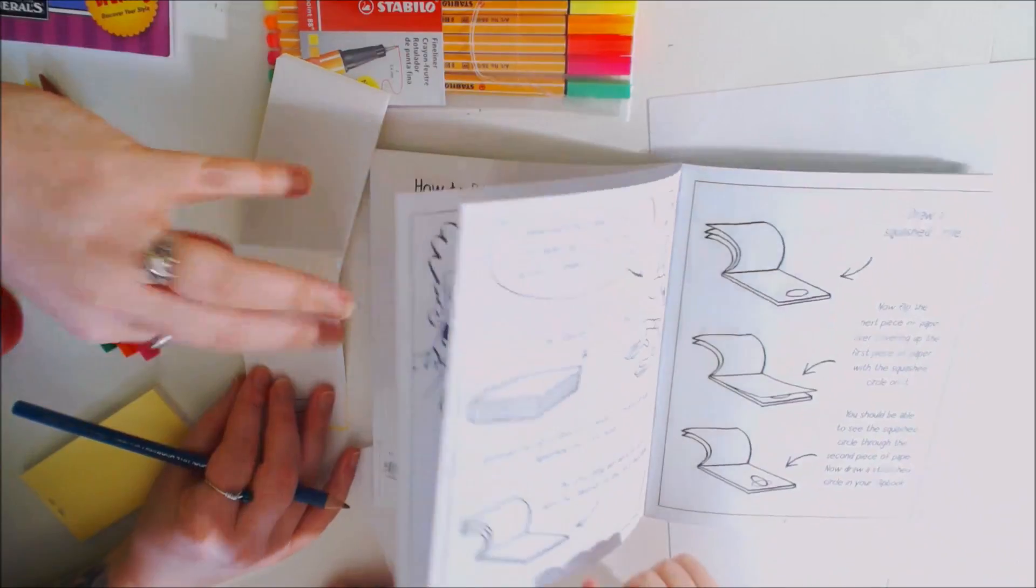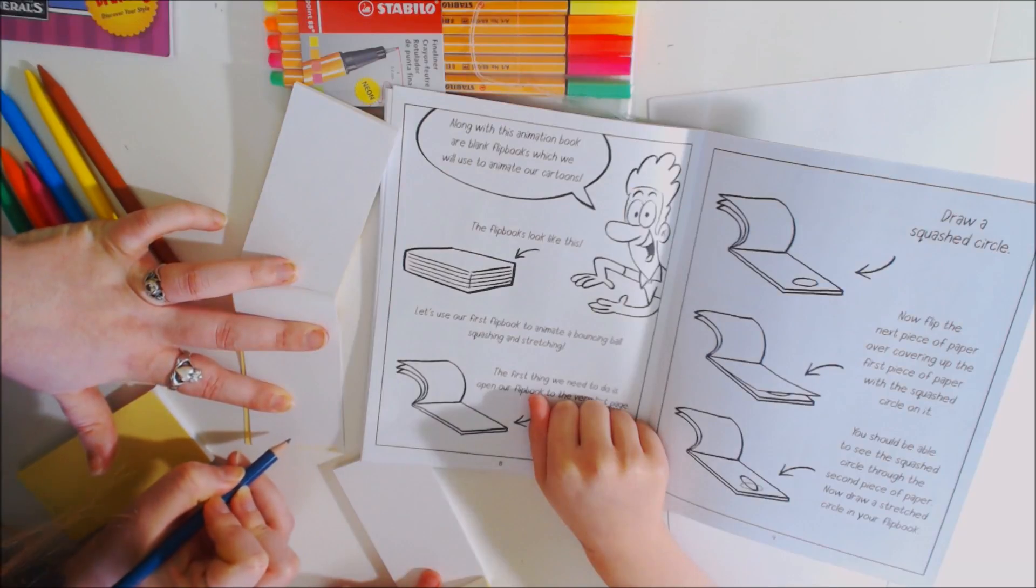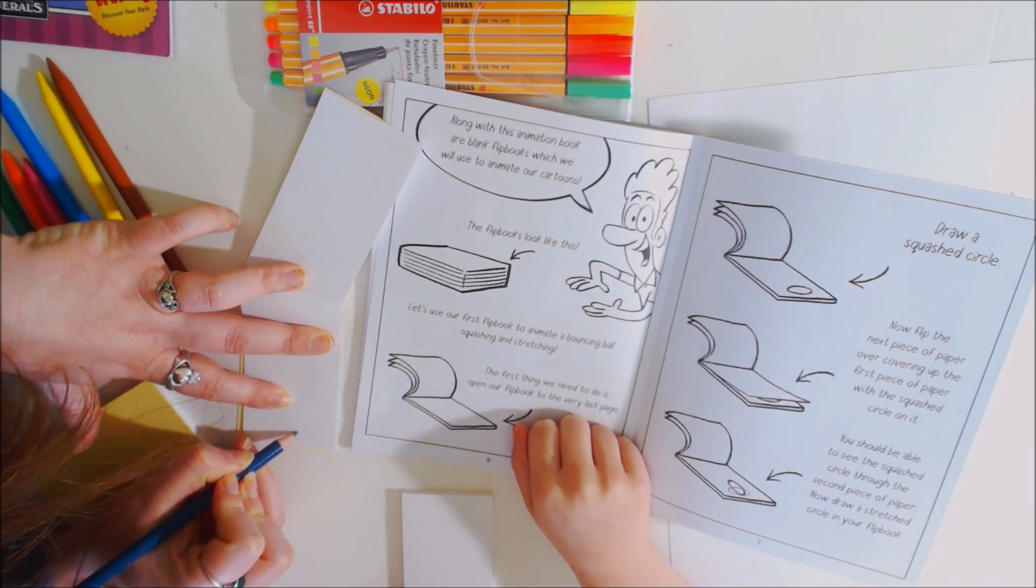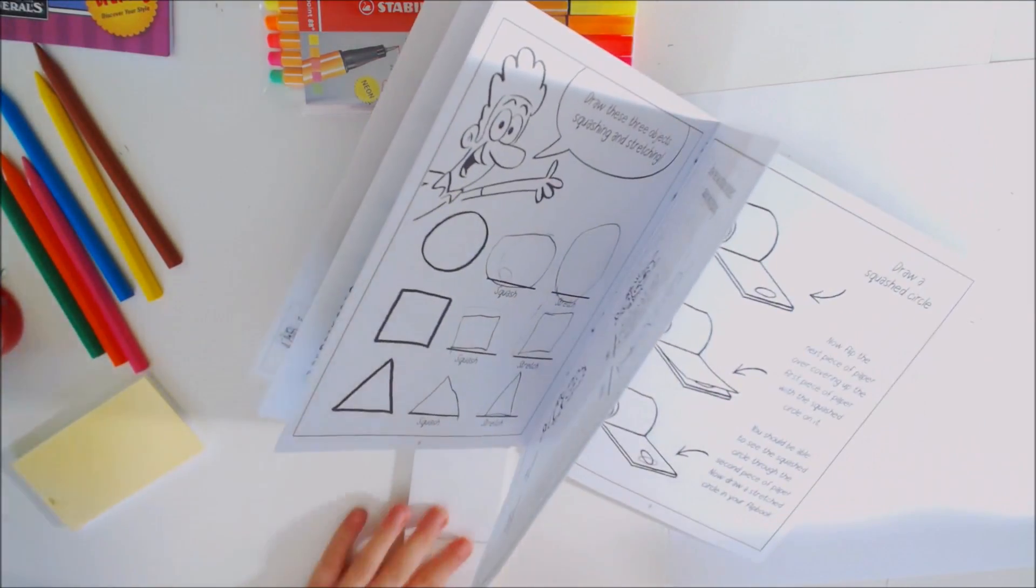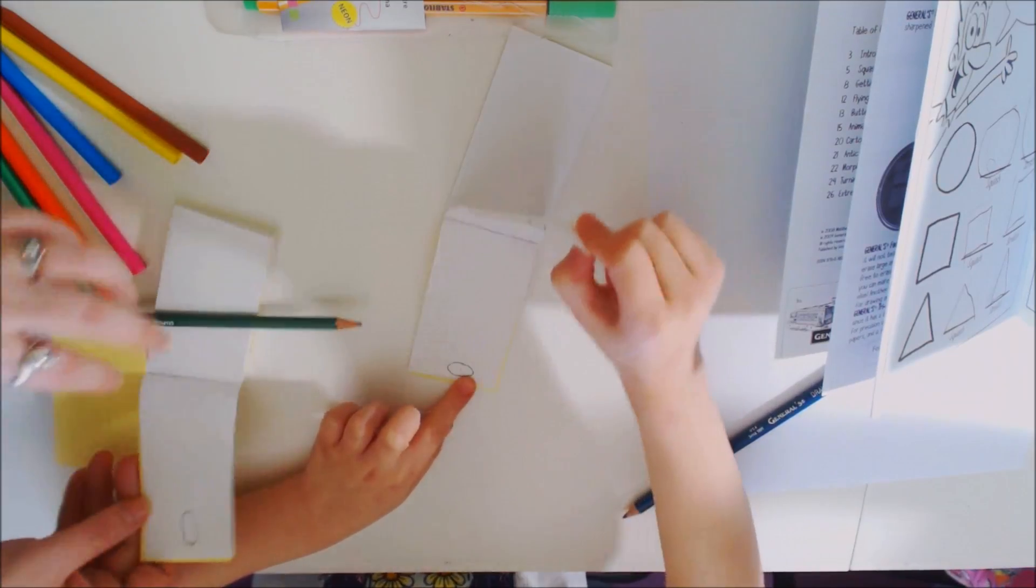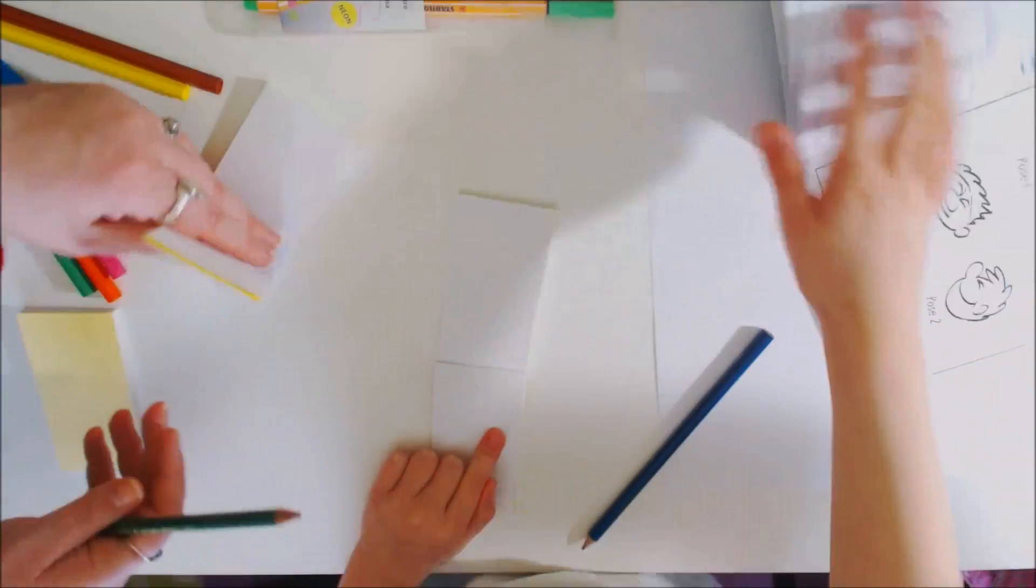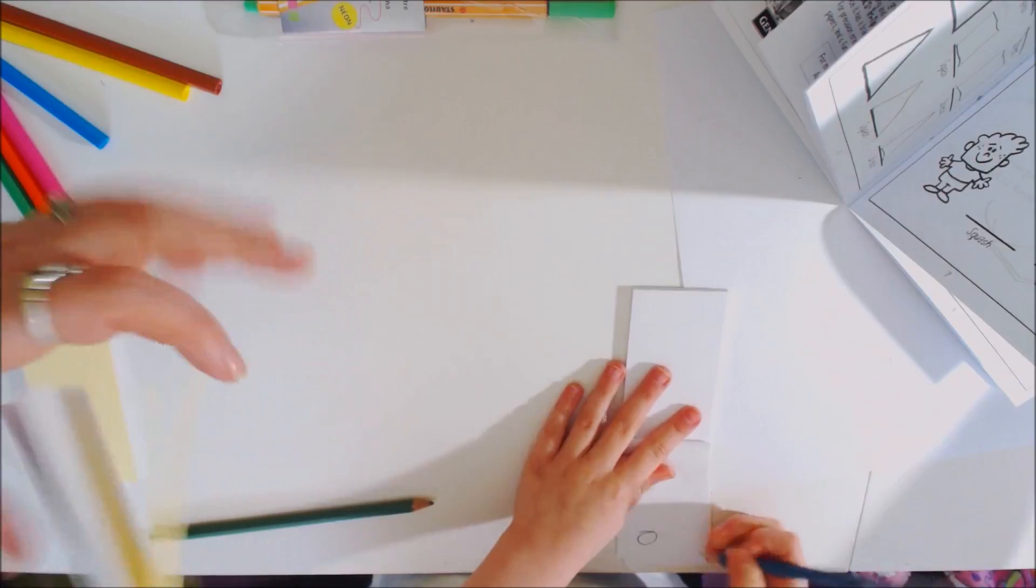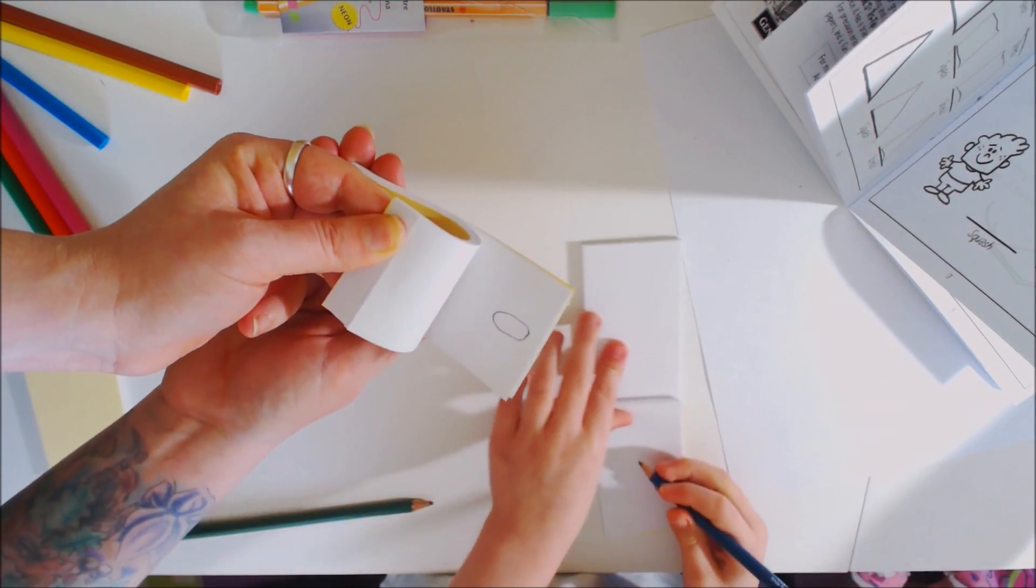First I'm going to show you on mine first, okay? Let me see. First it wants you to do a squashed circle, so I'm going to draw a squashed circle like that. And then hold on, it wants you to go to the next page, and you see how you can see the circle? Now it wants you to do a stretched. So here's the squashed, I can barely see. Yep, so stretched. So you can do this back and forth. Now you can try yours.